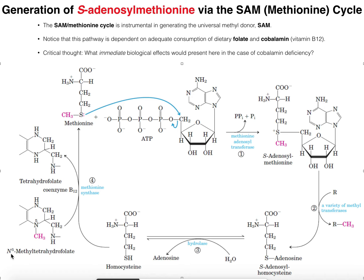We're going to need a derivative of tetrahydrofolate — N5-methyl tetrahydrofolate — and we're also going to need cobalamin, which is the scientific name for coenzyme B12. The N5-methyl tetrahydrofolate is going to donate its methyl group to the cobalt atom of B12, and then that methyl group will be donated from B12 onto the sulfur of homocysteine, generating methionine. The purpose of B12 is to receive the methyl group from tetrahydrofolate and then donate it to homocysteine.